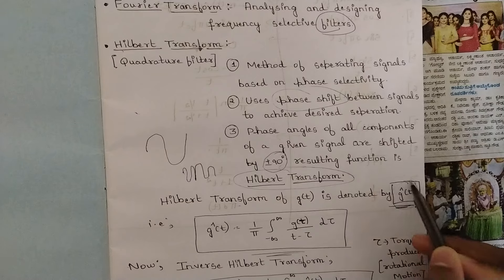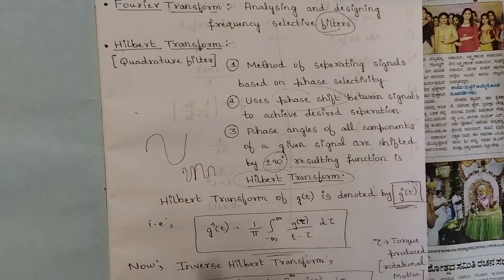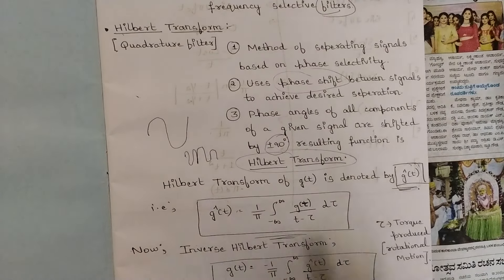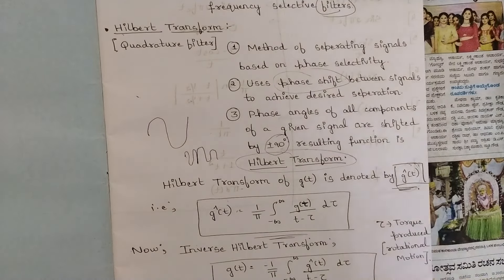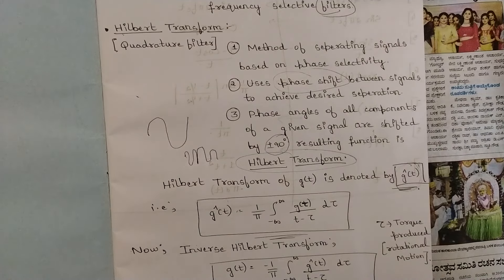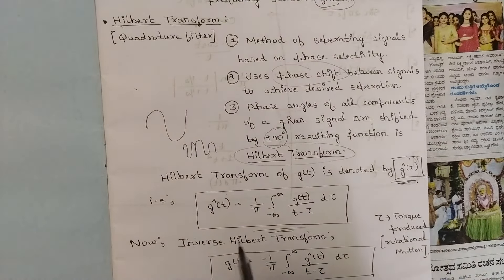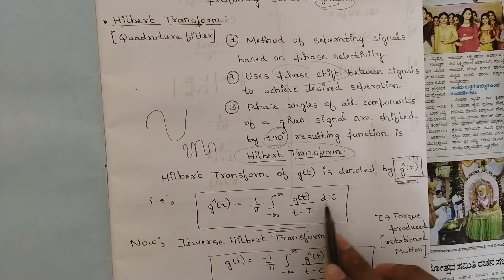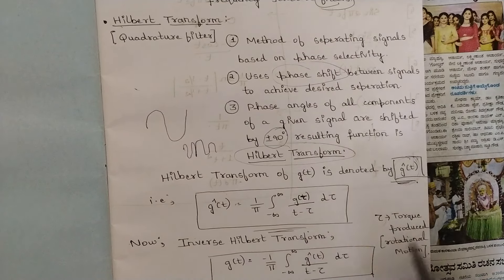To separate signals, phase angles must be changed to plus or minus 90 degrees. For a sine wave, a phase shift of plus or minus 90 degrees automatically converts it into a cosine wave — so sine and cosine can be separated from a single signal using Hilbert Transform. The Hilbert Transform of g(t) is denoted as ĝ(t), and the formula is very important. This subject has problem-based content — Digital Communication and Digital Signal Processing are the two main problematic subjects this semester.